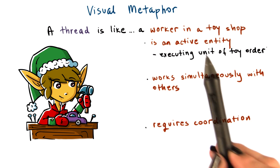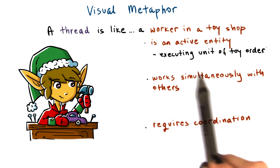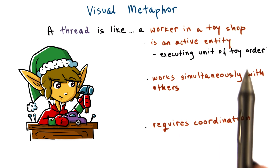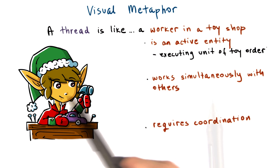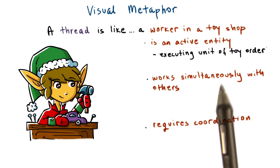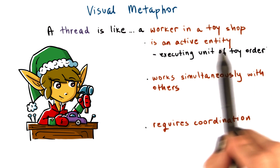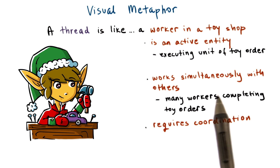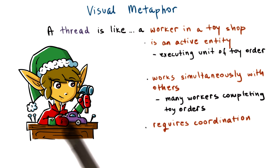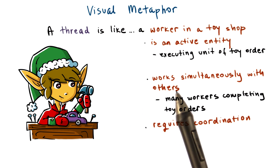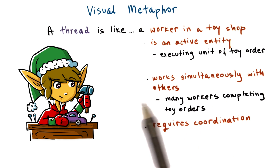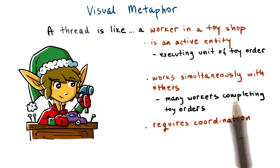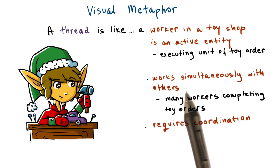A worker is an active entity in the sense that it's executing a unit of work that's necessary for a given toy order. Many such workers can contribute to the entire effort required for an actual toy to be built. Next, a worker can simultaneously work with others. You can imagine a shop floor with many workers all simultaneously or concurrently hammering, sewing, building toys at the same time. They may be working on the same order or on others.